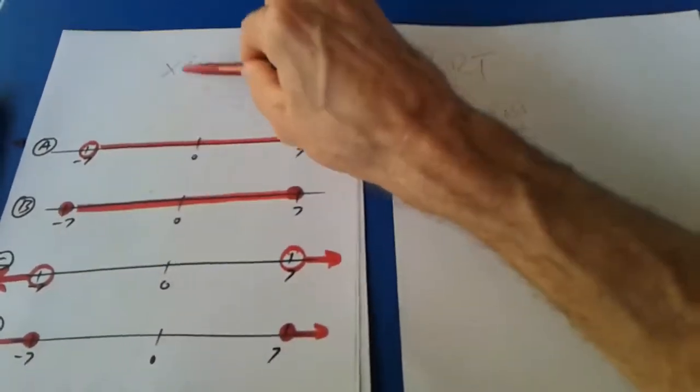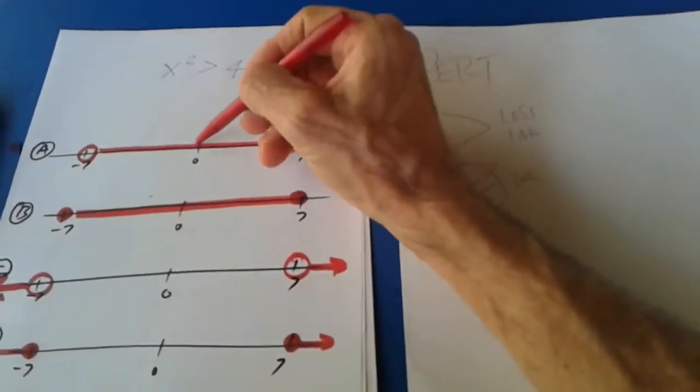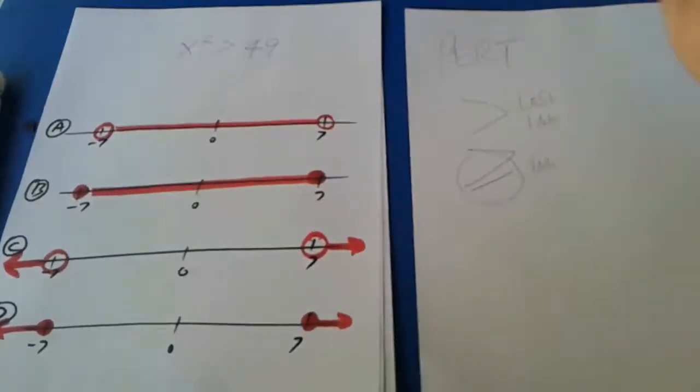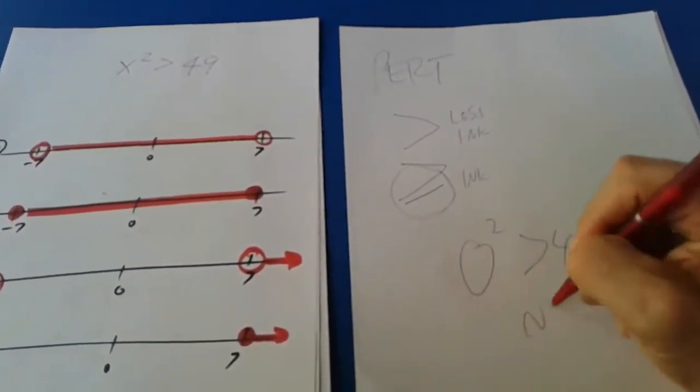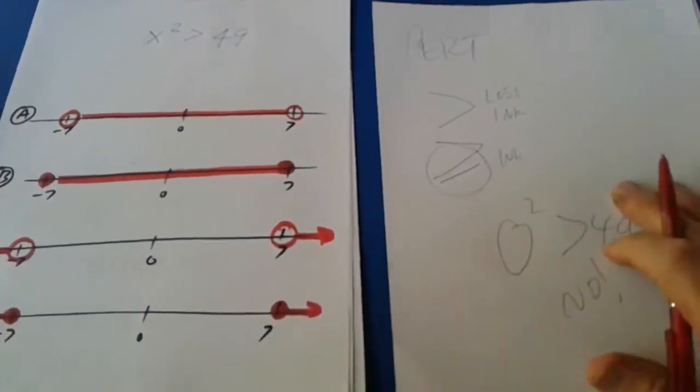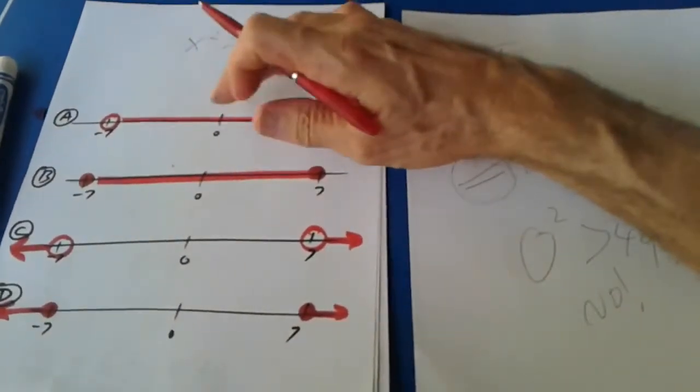Now let's plug it in. Let's put zero as an answer. Zero squared is bigger than 49? No, that's not possible. So we can't use this one.